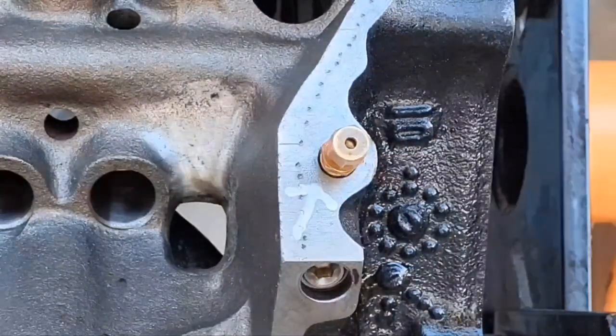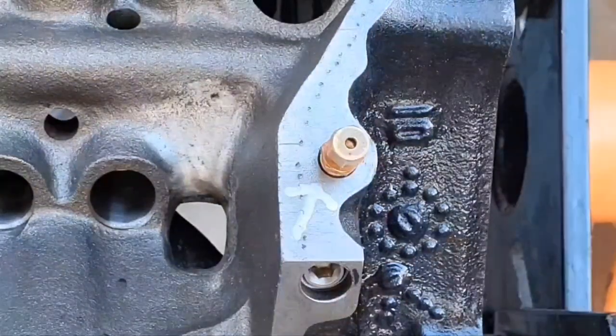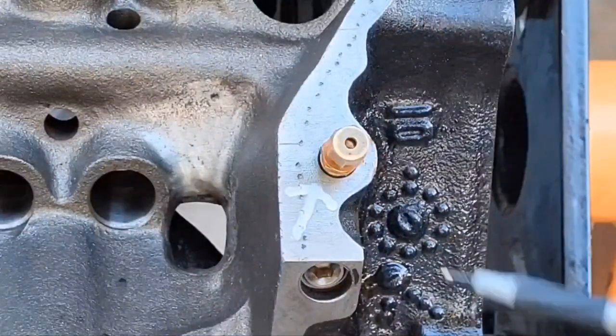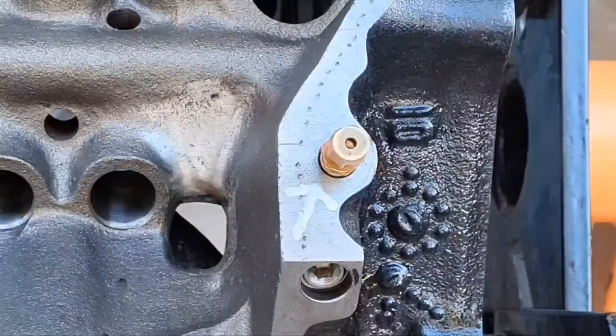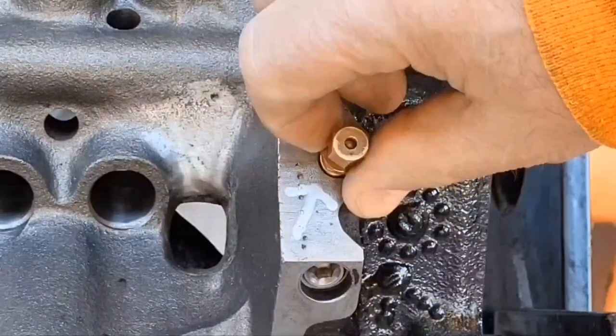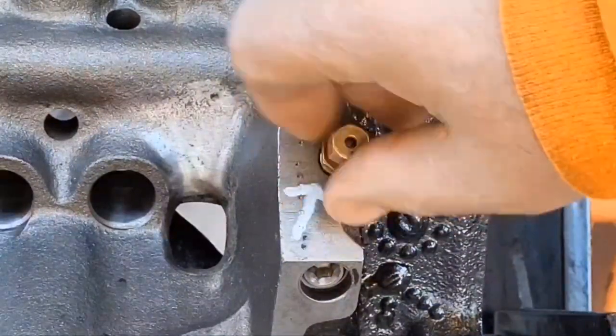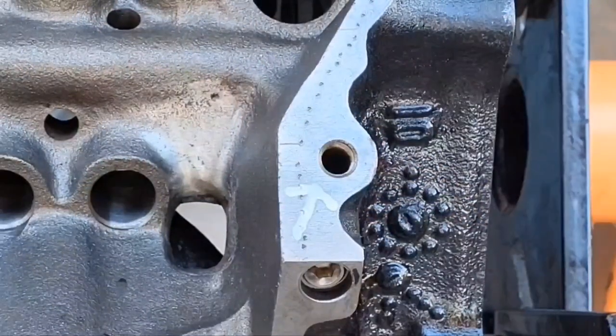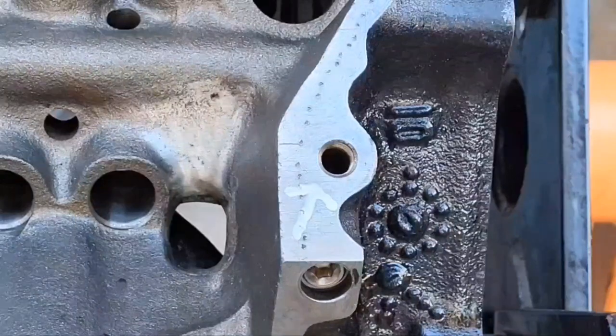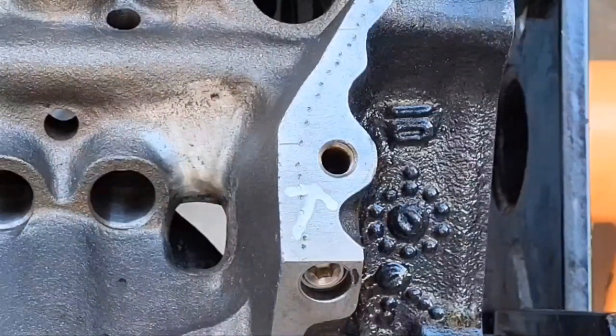I want to bring your attention to this white arrow right here. It's pointing to the fitting for the oil pressure gauge. This passage goes down to the cup, which would be the bottom of the cup down inside the hole.